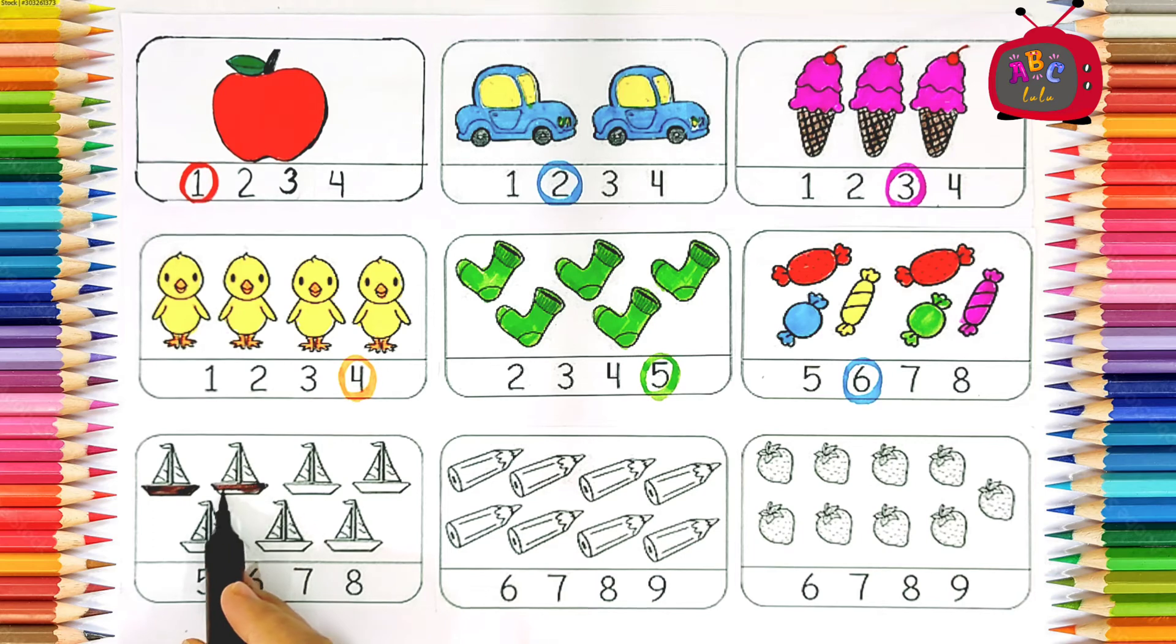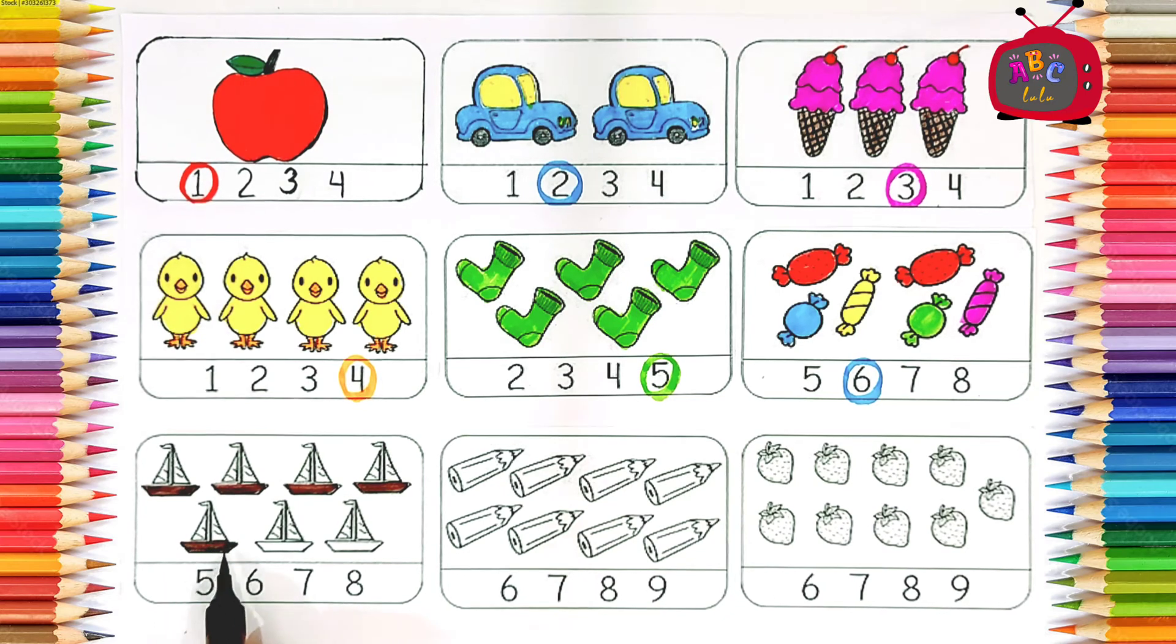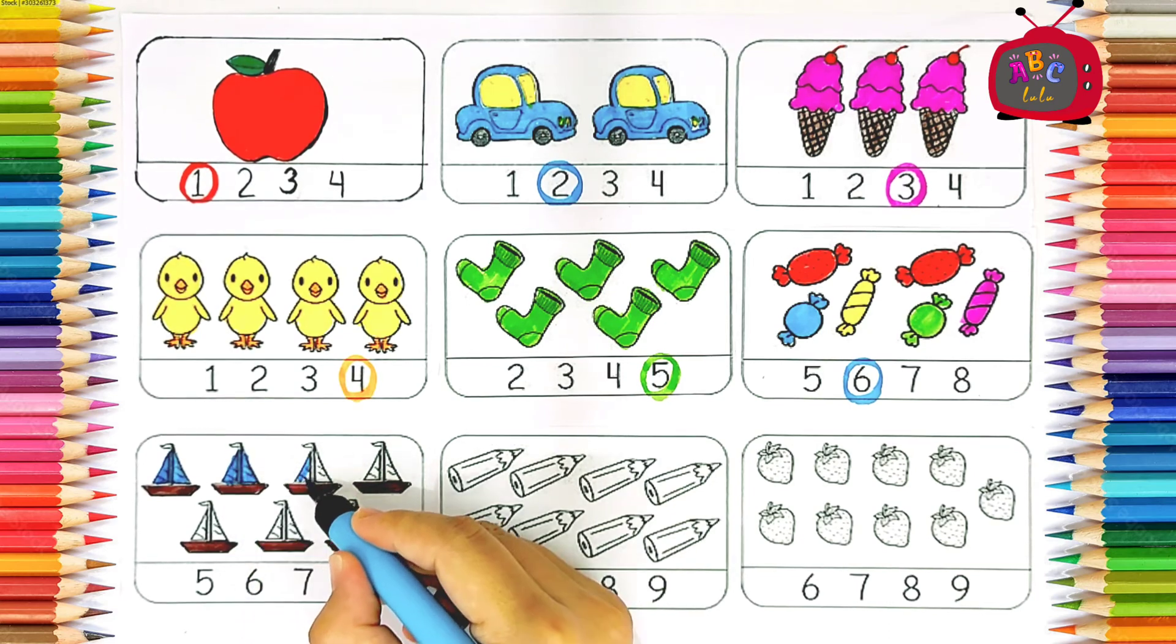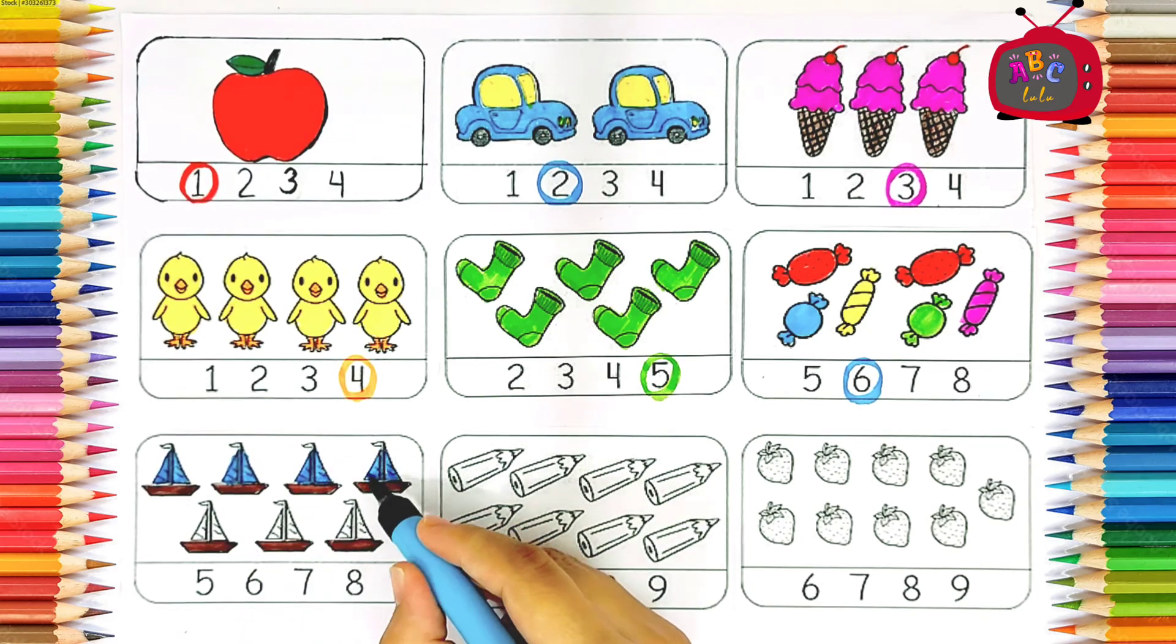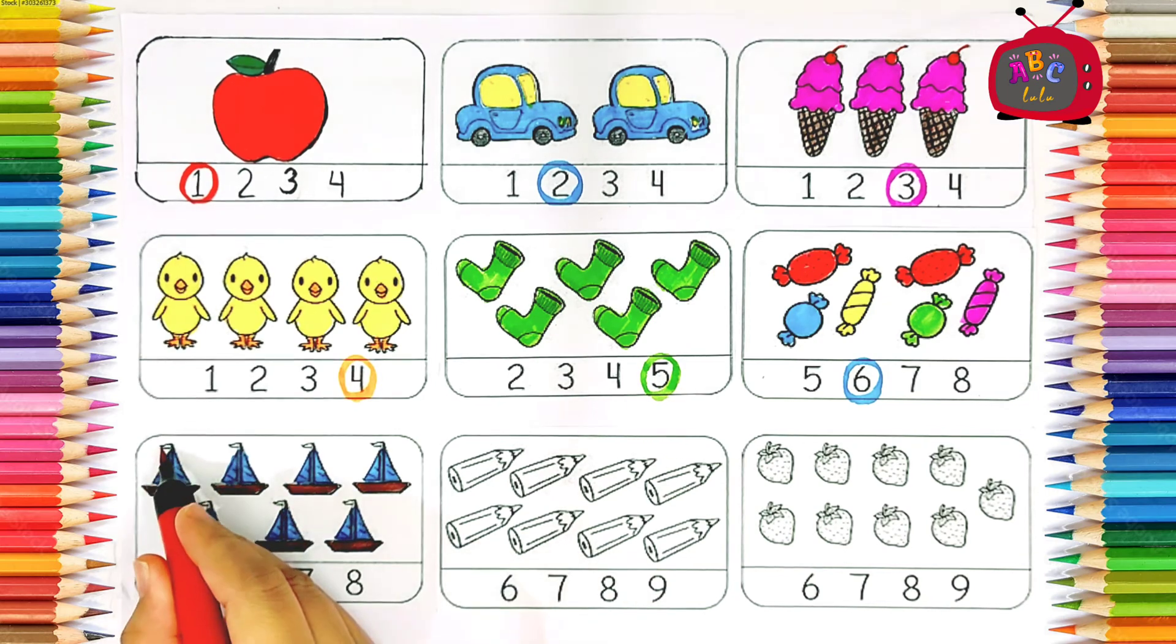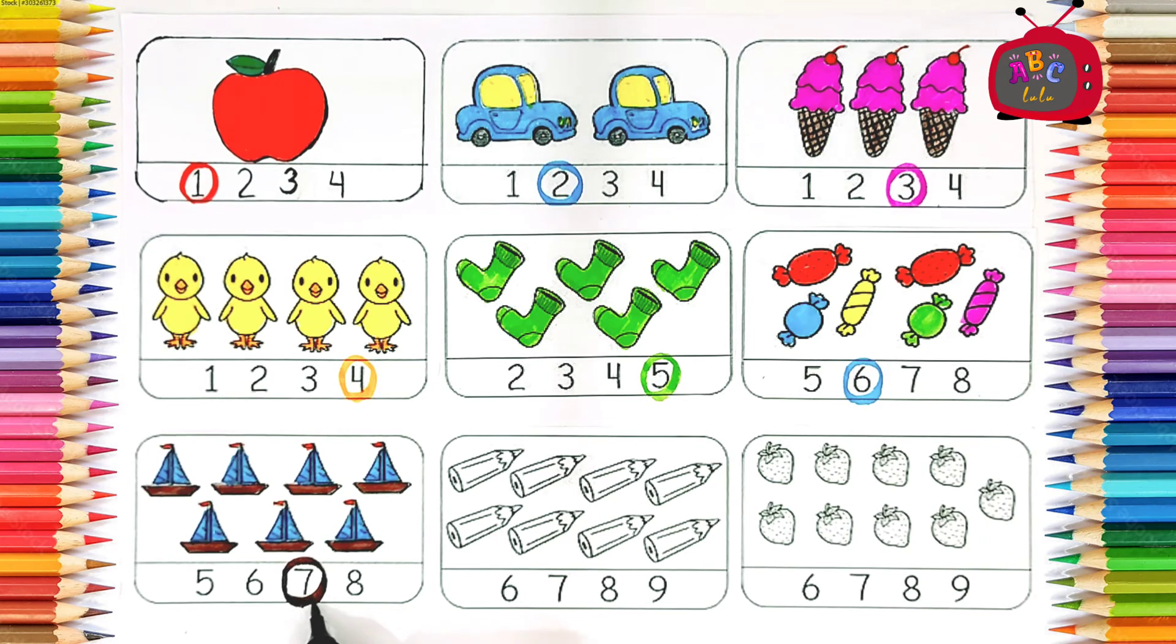Yacht. One, two, three, four, five, six, seven. Seven. One, two, three, four, five, six, seven. Seven yacht. Seven. S-E-V-E-N. Seven.